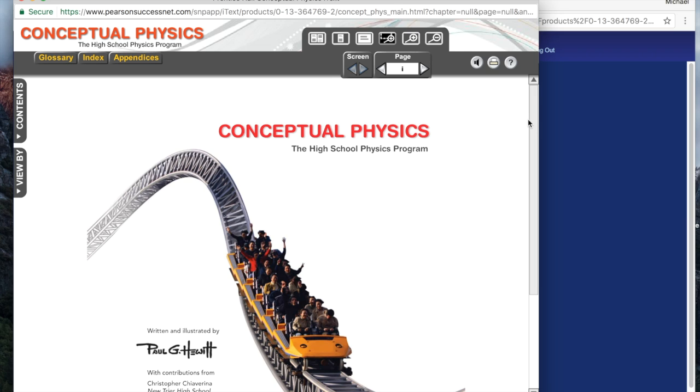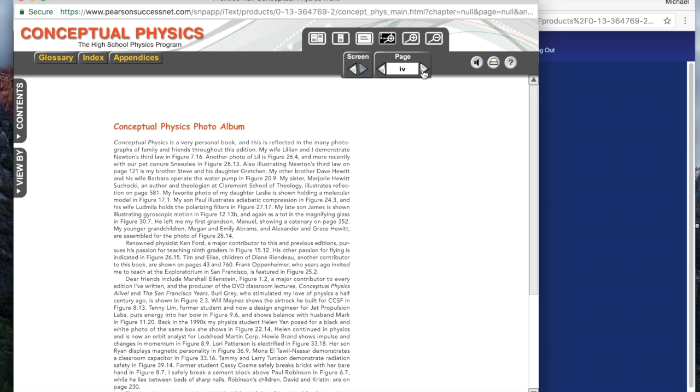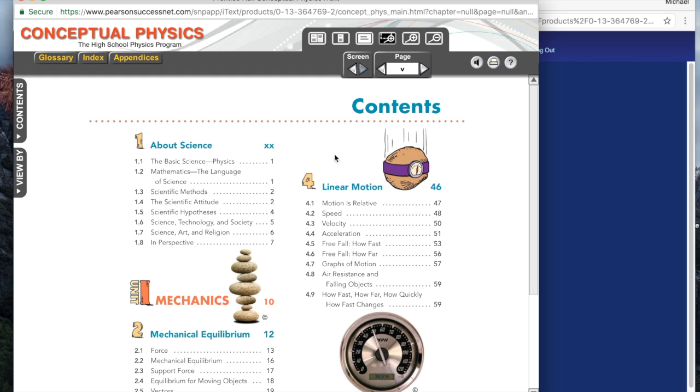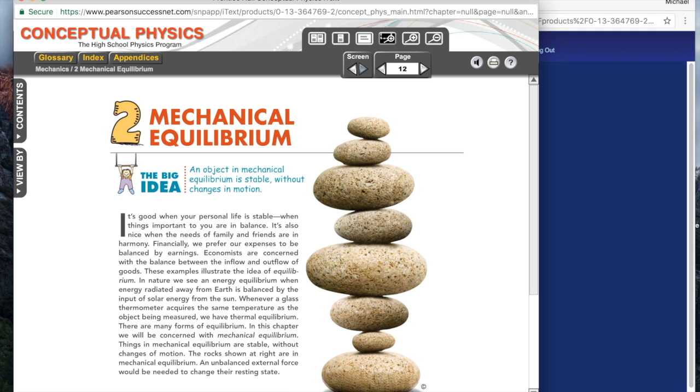The first thing you should do is figure out how to navigate through this a little bit. You can go through the different pages here and toggle through just like you would any other book. Here we're at the table of contents. You can also put in specific page numbers. Here's page 12 at the beginning of it.